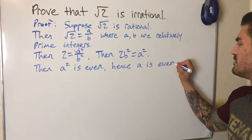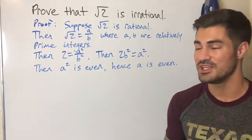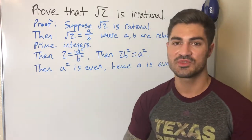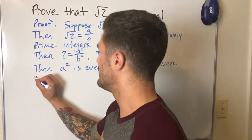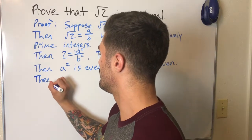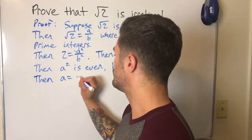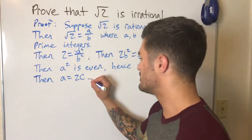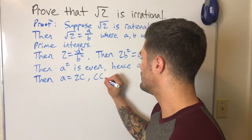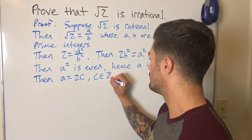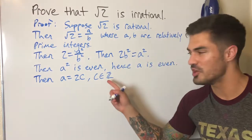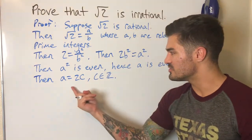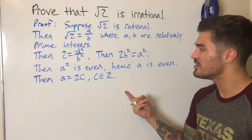Since a is even, we can use the definition of what it means to be even and say that a can be expressed as 2 times some integer. So then a = 2c, where c is some integer — that double-bar Z is the symbol for integer.